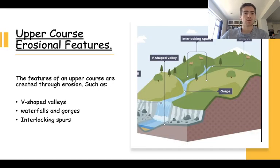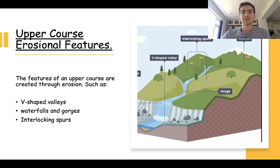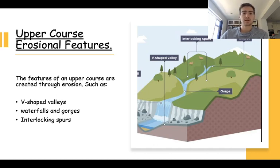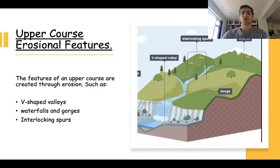So, upper course erosional features. The features of an upper course are created through erosion. Remember, erosion is the breaking down of the riverbanks and the riverbeds, and we've got four different types of erosion which we covered in the previous lesson. The features that this creates are v-shaped valleys, waterfalls and gorges, and something called interlocking spurs — and you can see all three of those on the diagram on the right-hand side.